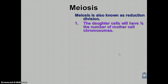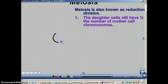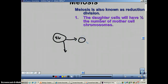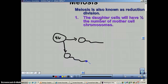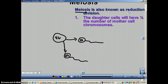What happens in meiosis is the number of chromosomes in the resulting cells is half the number of the mother cell. In a human being, the mother cell has 46 chromosomes, but we're going to divide it into two gametes — in this case sperm cells. A sperm cell has 23 chromosomes, because when it joins with an egg cell that also has 23 chromosomes, you get back to 46. So how do we go from 46 to 23? That's through meiosis — meiosis is reduction division and we reduce by half.